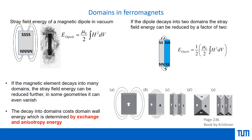Today we talk about domains in ferromagnets. Just like a bar magnet with south and north poles, you can see stray fields coming out from the magnet. This can be clearly visualized using iron particles showing the stray field lines. If you calculate the dipolar energy involved, it relates to the demagnetization fields or stray fields within a certain volume.